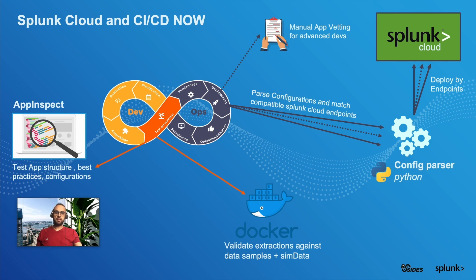Once a developer commits a new version of a configuration file, we first use AppInspect to validate the application structure, the validity of configurations, and all checks provided by AppInspect to guarantee application quality and compliance with Splunk Cloud rules.